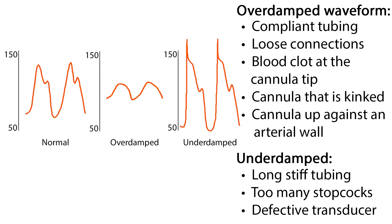Waveforms can be over-damped or under-damped. The over-damped waveform may be caused by compliant tubing, loose connections, a blood clot at the cannula tip, or a cannula that is kinked or up against the arterial wall. The under-damped waveform can be caused by long stiff tubing, too many stopcocks, or a defective transducer.